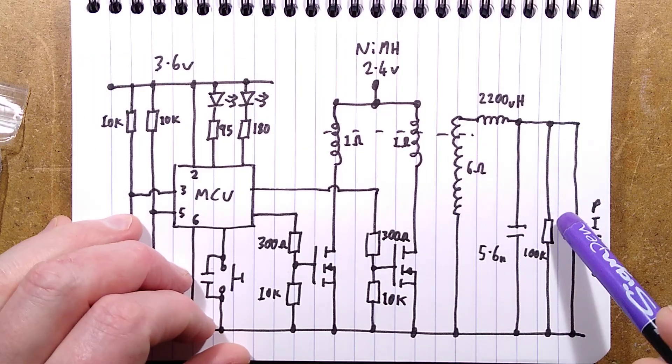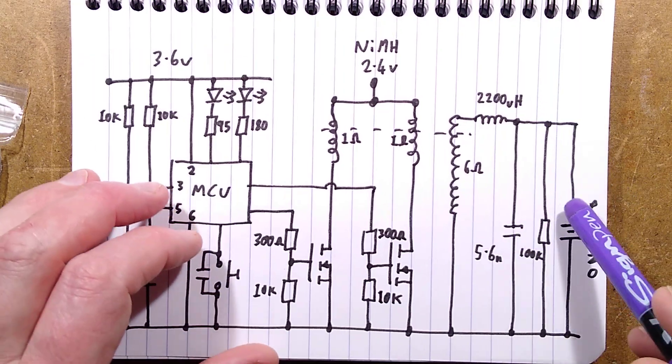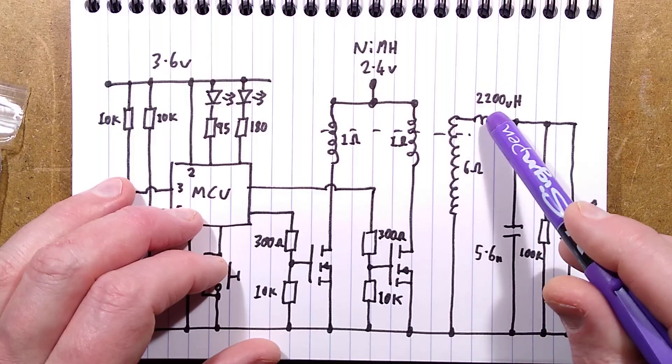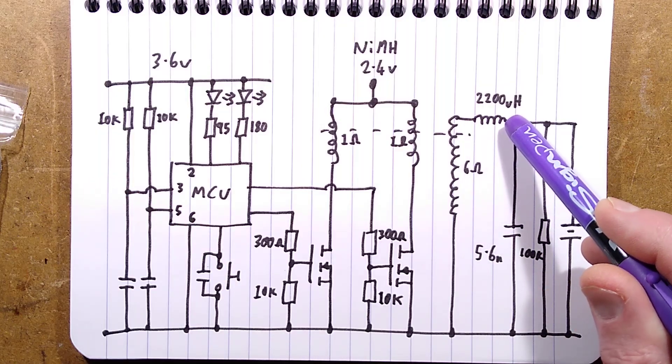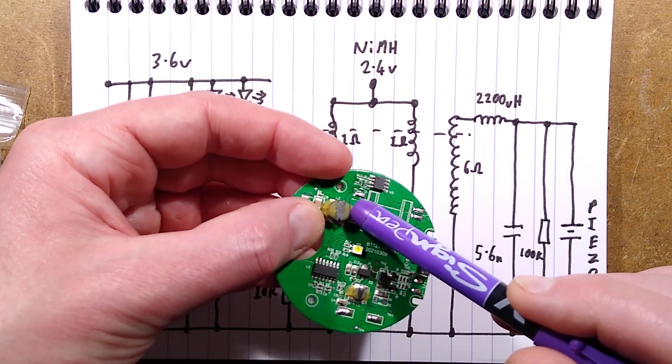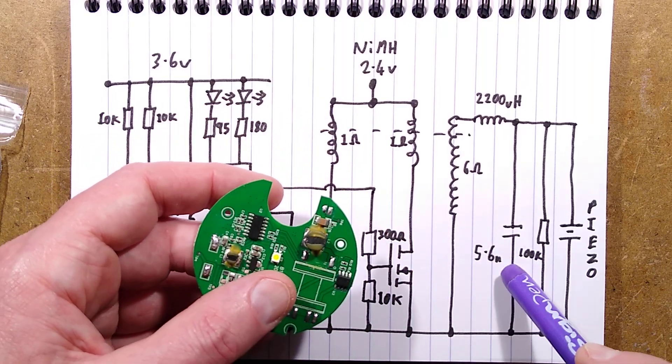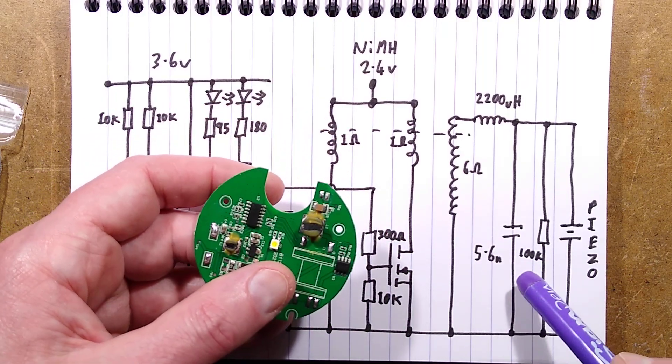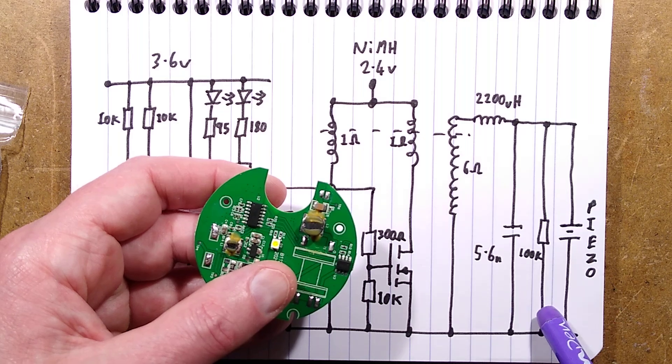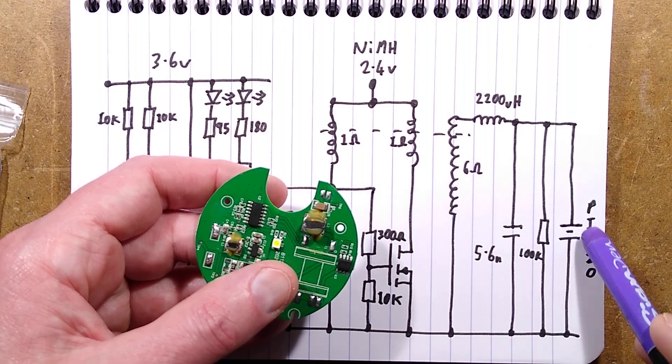The output, and this is where it's the heart of resonance, has a 2200 microhenry inductor, that's this inductor here, and then a capacitor after it, fairly high voltage, I'd guess, 5.6 nanofarad is what I measured in circuit, and a 100k resistor across it, and then the piezoelectric transducer.